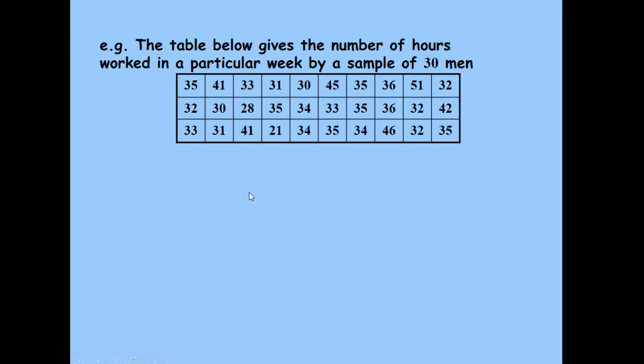Looking at this data here, the number of hours worked by a sample of 30 men. Using five-hour intervals, we're going to draw a diagram that will go, for example, between 20-25, 26-30, and so on.